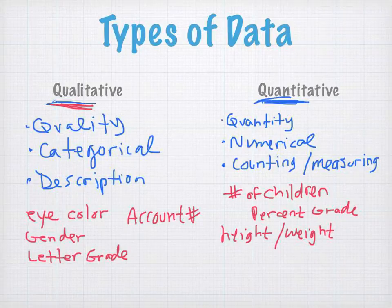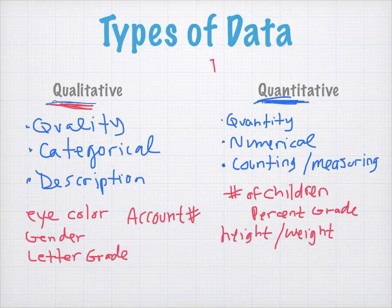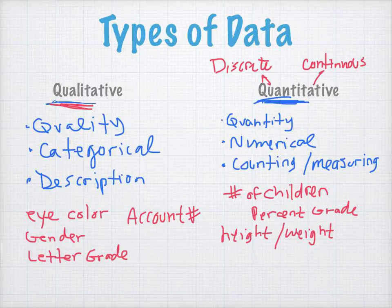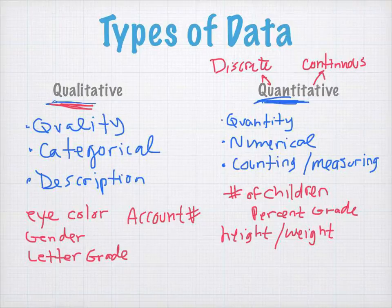There are two main types of quantitative data. One is discrete, and the other is continuous. On the next page, we're going to see whether or not, if we gather quantitative data, how do we tell if it's discrete and how do we tell if it's continuous.